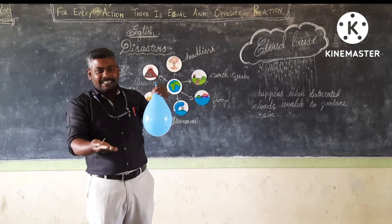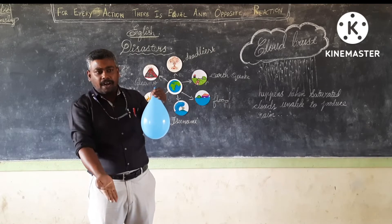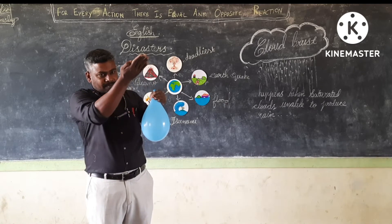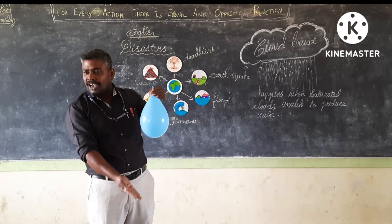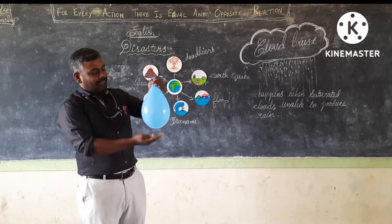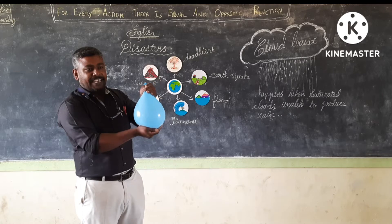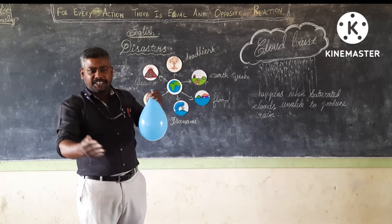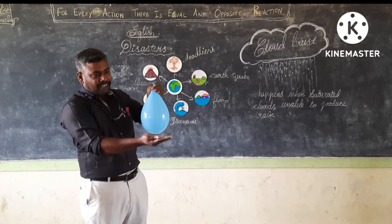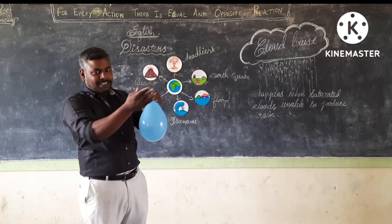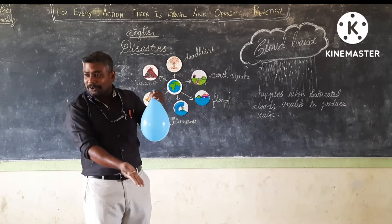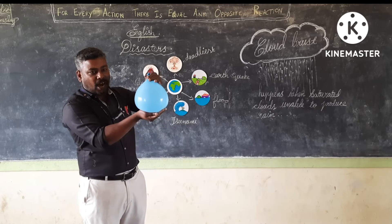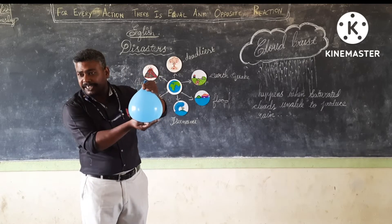In that time, we know that warm air goes upward. This cloud is saturated and about to give rain. But on some occasions, the hot air moves upward and it prevents the saturated cloud from producing rain.